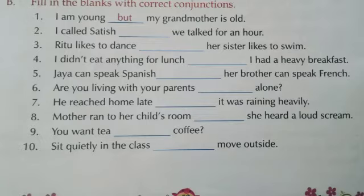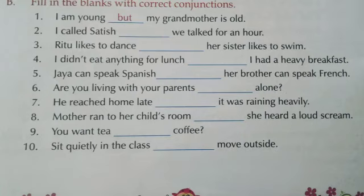Moving on to the next exercise: fill in the blanks with the correct conjunctions. Question number one is already done for you. Second question: I called Satish — we talked for an hour. Here we need to join two sentences of similar ideas, so the conjunction is 'and': I called Satish and we talked for an hour.